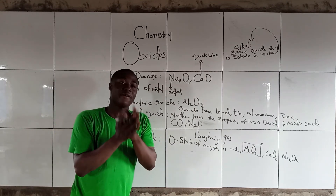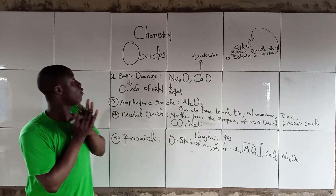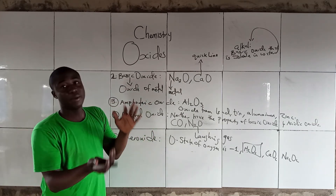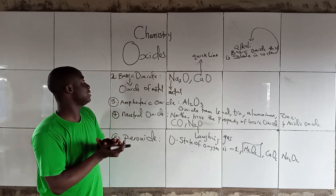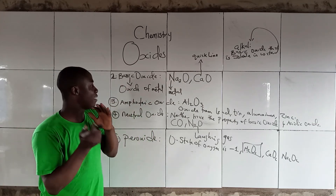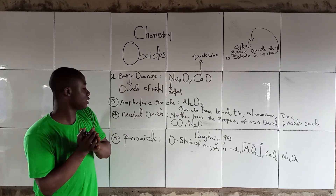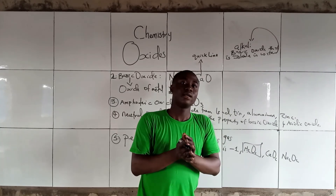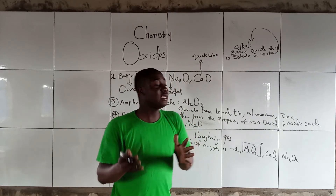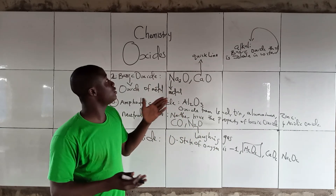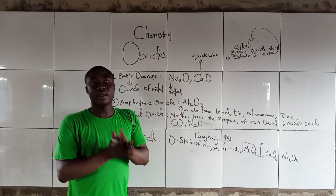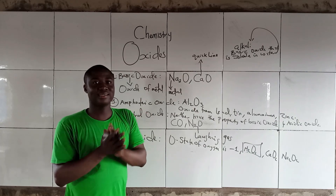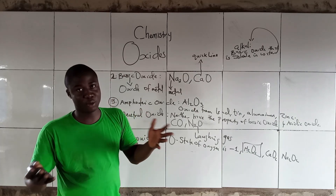So, we have 5 kinds of Oxides: Acidic Oxides, Basic Oxides, Amphoteric Oxides, Neutral Oxides, and Peroxides. These are the key concepts about Oxides. Thanks for watching.